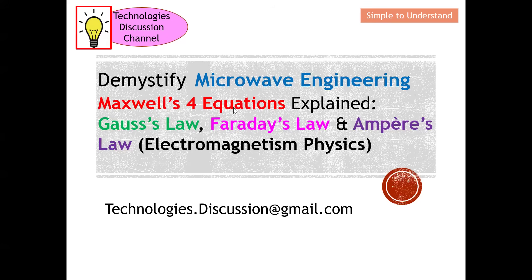Maxwell's equations actually consist of four equations. The first two are Gauss's law — we have Gauss's law for the electric field and Gauss's law for the magnetic field. The third is Faraday's law, and last but not least, the Ampere-Maxwell equation. These four equations sum up the electromagnetic physics for microwave engineering.